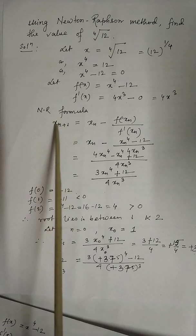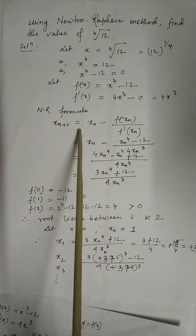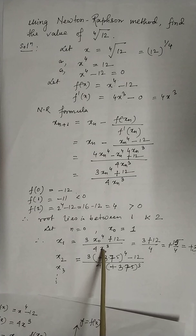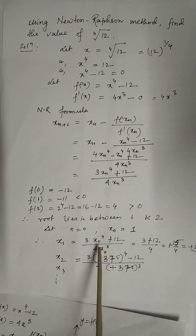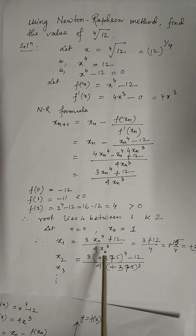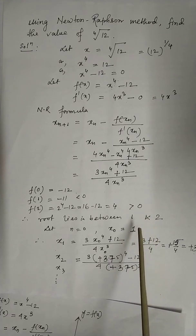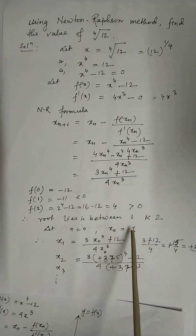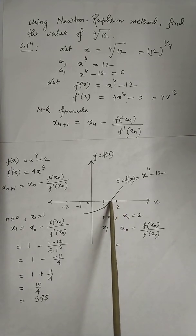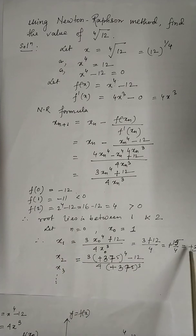Now in this Newton-Raphson formula, if you put n equals 0, then you will have x_1 equals (3x_0⁴ + 12) by 4x_0³. What is x_0? This x_0 is not 0. This x_0 is the initial value of x, that is the initial approximation of x. So the interval you have got is 1 and 2. Any one of them you can take as x_0. If you take x_0 as 1, then x_1 will be 3.75.